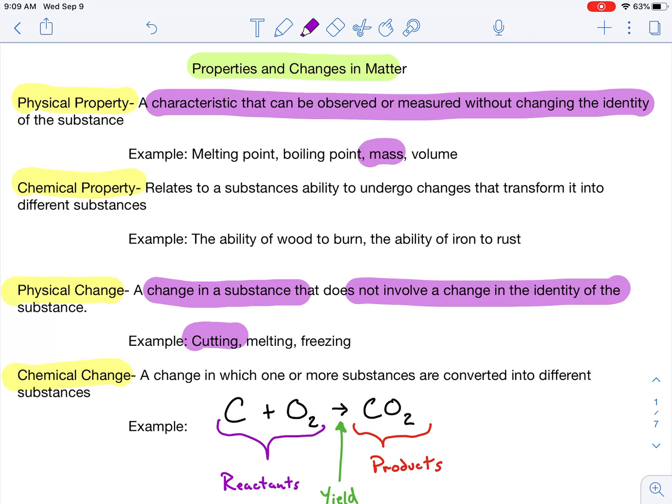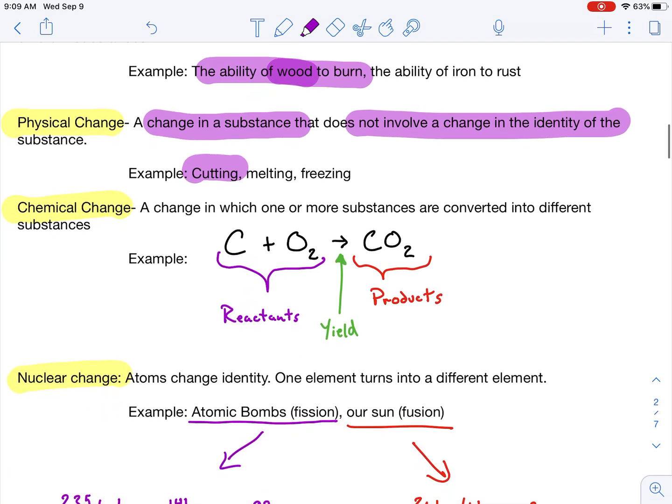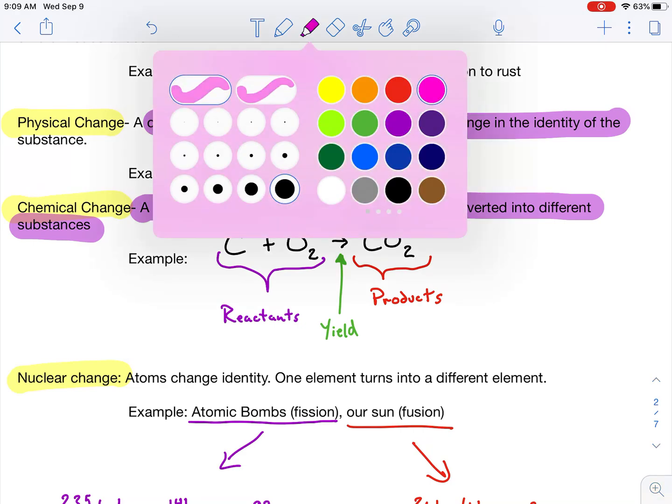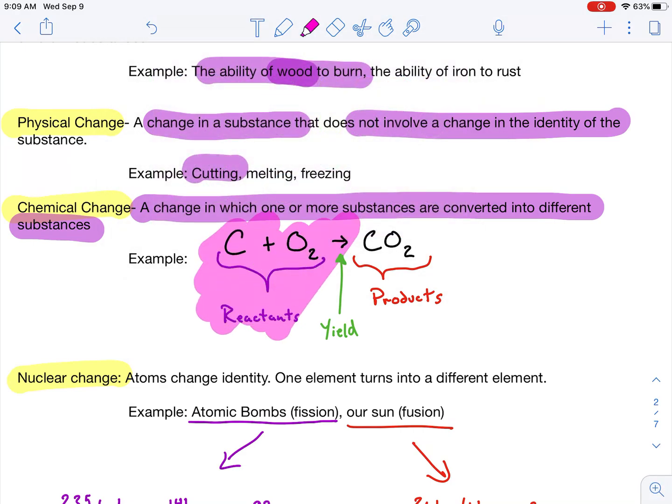A chemical property, chemical change. Now, we're talking about actually changing the identity of the substance. So, when I burn wood, it's no longer wood. It's changed to something else. The ability to burn or it can combust, we call that a chemical property because it changes the substance as you test that property. A chemical change is when you're showing that and converting it to different substances.